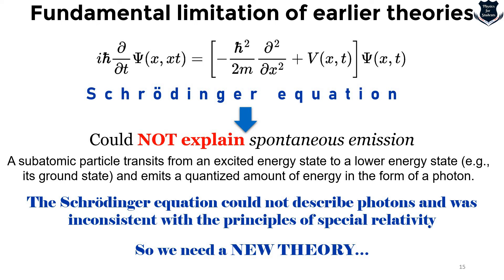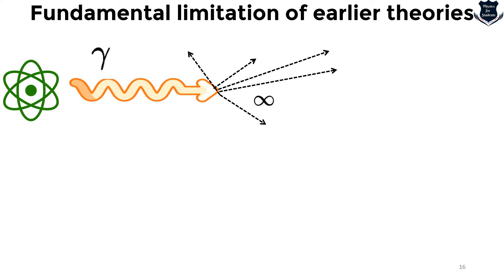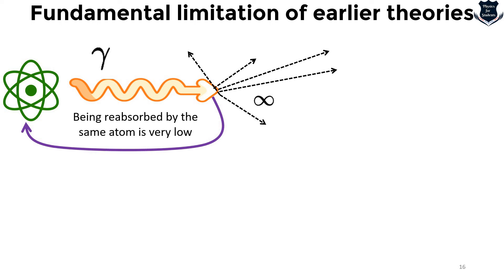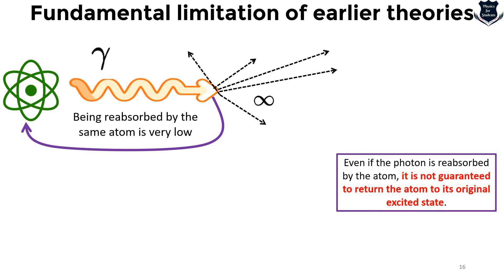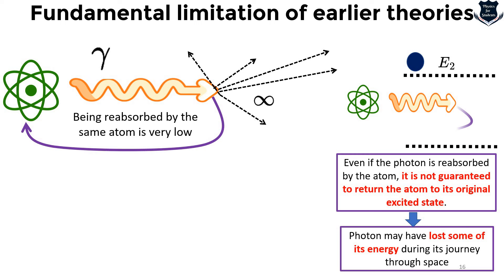The need for a new theory arose despite the evolution of Newtonian mechanics, classical field theory, Niels Bohr, de Broglie, and the Schrödinger equation — the main reason being the inability to explain spontaneous emission, since the Schrödinger equation is not in accordance with special relativity. In spontaneous emission, an atom emits a photon that has an unlimited number of paths. The probability of the photon returning and being absorbed by the same atom to restore its original state is very low.